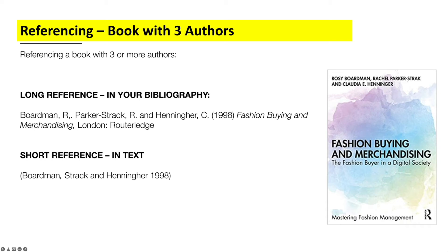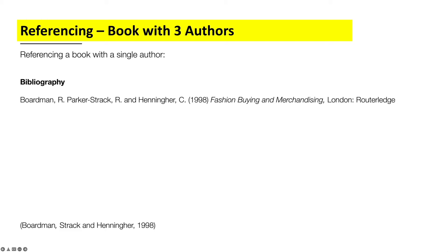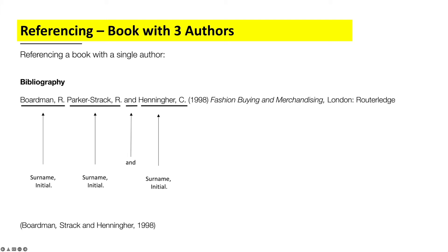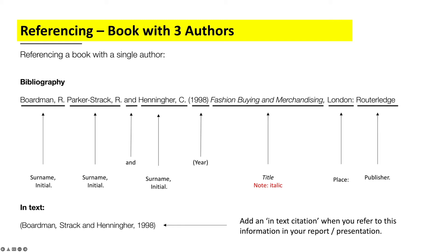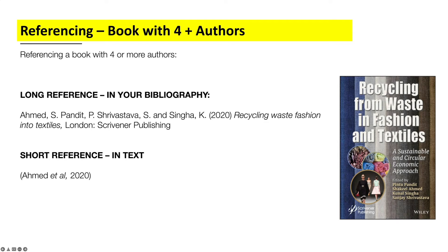For a book with three authors, it's a similar format: author's name, comma, first initial, full stop; second author's name, comma, first initial, full stop; then 'and' and the third author's surname, comma, first initial, full stop. Then year in brackets, title in italic, place of publication with a colon, and the publisher. For the in-text citation, you include all three surnames, putting 'and' before the third one, then a comma and the year, all in brackets.